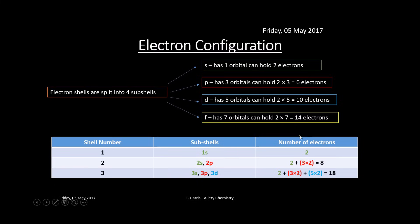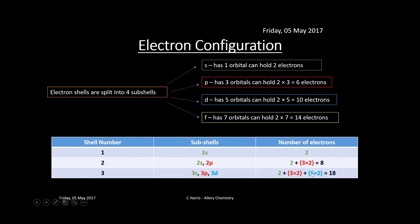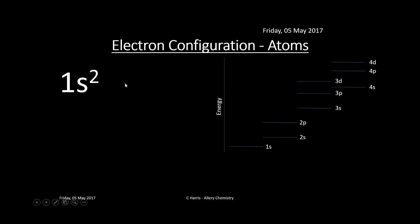Looking at the shell structure: the first shell has only one s orbital, holding a maximum of two electrons. In the second shell, we have 2s and 2p orbitals — maximum of eight electrons. In the third shell, we have 3s, 3p, and 3d orbitals — the d orbitals hold ten electrons, so the third shell can hold eighteen electrons in total.